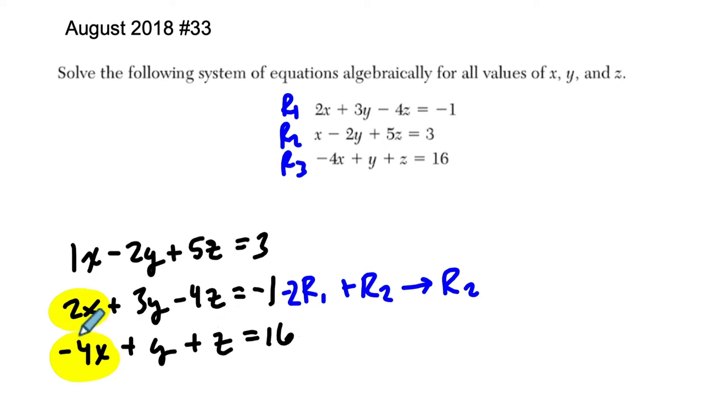And then likewise, to cancel out the negative 4x, multiply my first equation by 4, add it to my third equation, and put the result in the third row.